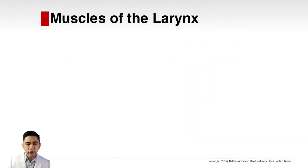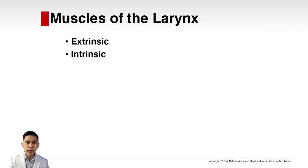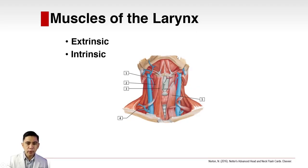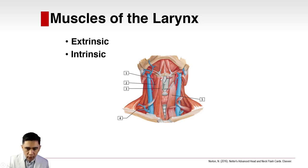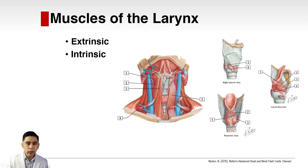The muscles of the larynx can be extrinsic or intrinsic. Intrinsic muscles pertain to muscles found within the laryngeal complex, while extrinsic muscles are found outside it. Anything that influences the movement of the laryngeal complex but is not part of it are extrinsic muscles — these include the strap muscles and other neck muscles.